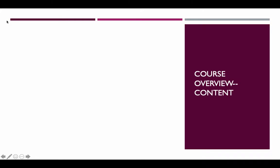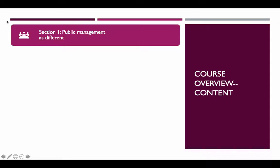Let's talk about the course and give you an overview of the content we're going to cover throughout the semester. The first section is going to be on the theme of public management as different, and to the extent relevant, public service or public employment as different as well. We're going to talk about things like oversight from the public and press that might not happen in the same way in the private sector, stakeholders for public organizations, etc. We're going to get into that today.